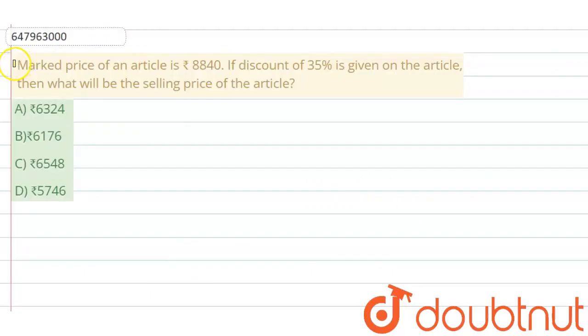Hello guys, welcome to Doubtnet. Our question is: marked price of an article is Rs. 8,840. If discount of 35% is given on the article, then what will be the selling price of the article? 4 options given हैं और इस question को हम लोग solve करते हैं.